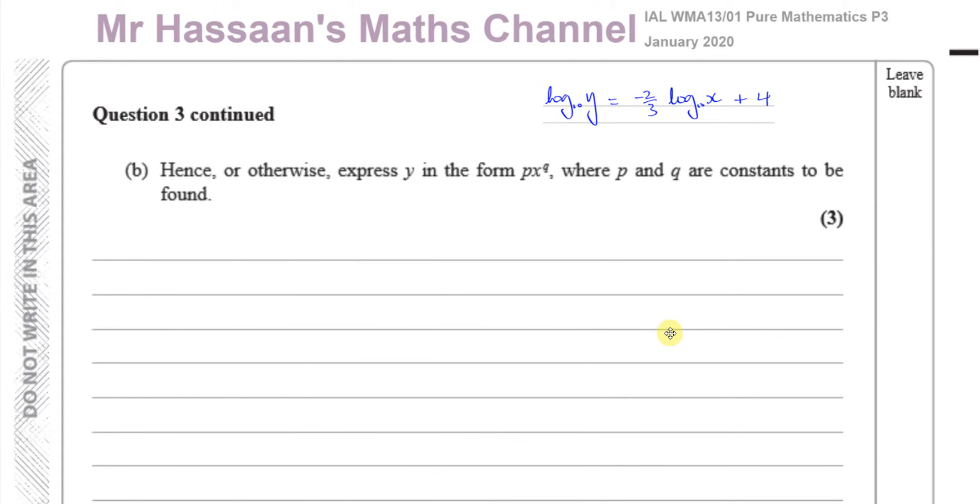Part B says, hence or otherwise, express y in the form p x to the power of q, where p and q are constants to be found. So, once we've got this here, we have a variety of methods we could use to express it in this form. So one of the ways we could do it is we could find the value of p and q. So we want y to be in the form y equals p x to the power of q.